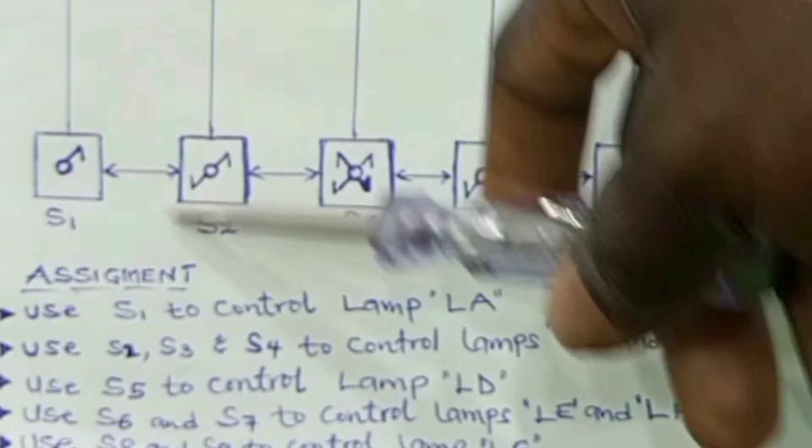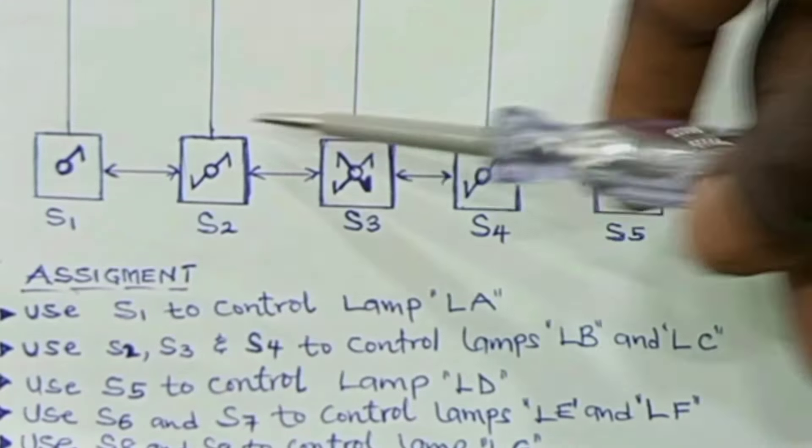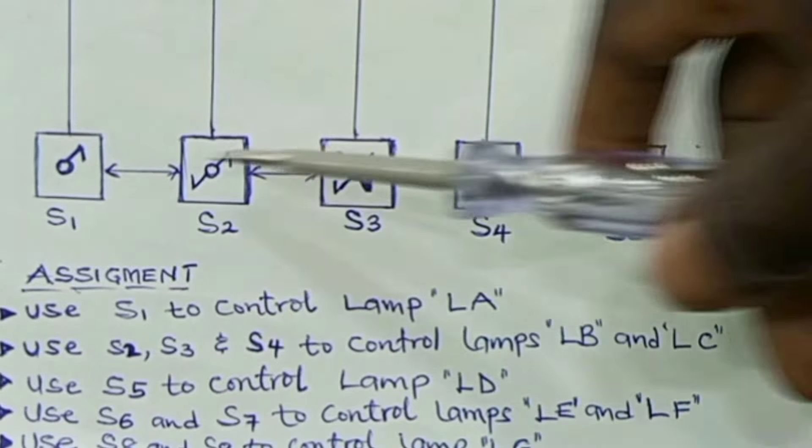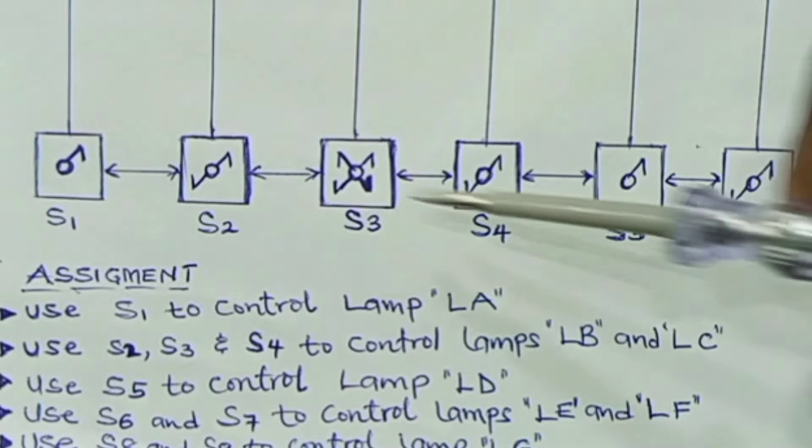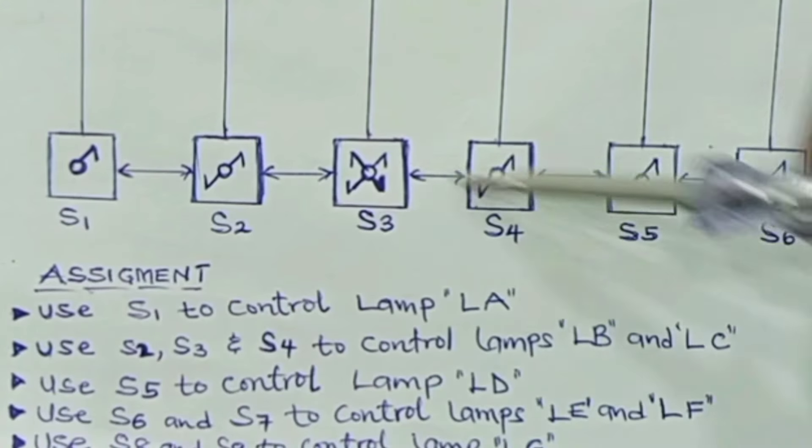I gave you some symbols to study. This symbol means two-way switch. That is one-gang two-way switch, these two. We need two of them, together with the intermediate, so that we can control these two lamps from three different locations.